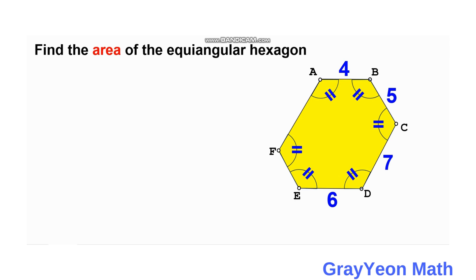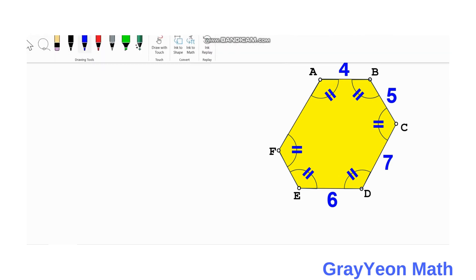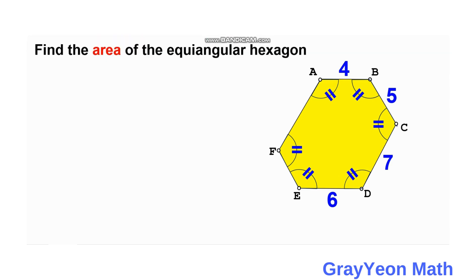The first thing we can do is draw lines from point C. This line should have the same inclination as BC, and horizontal lines from DE. Since it is given that the hexagon is equiangular, this angle is 120 degrees.